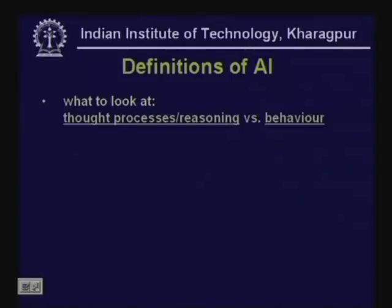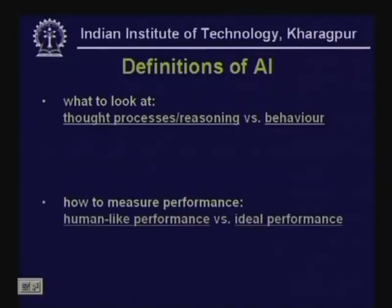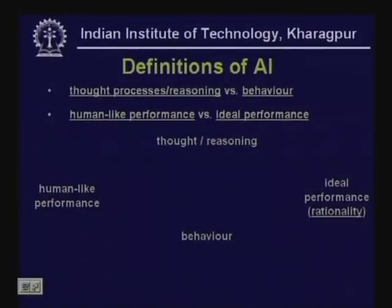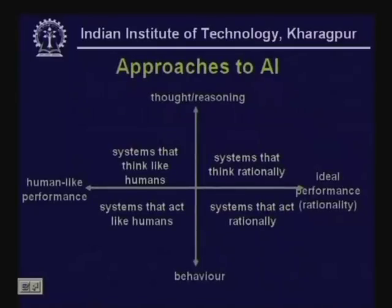Based on these criteria we can look at different ways of defining AI. We may look at thought processes or reasoning versus behavior, and human-like performance versus ideal rational performance. This diagram shows the four different definitions that emerge from these two dichotomies: on one hand thought versus behavior, on the other hand human-like versus ideal performance.